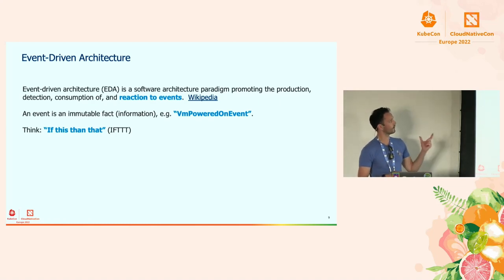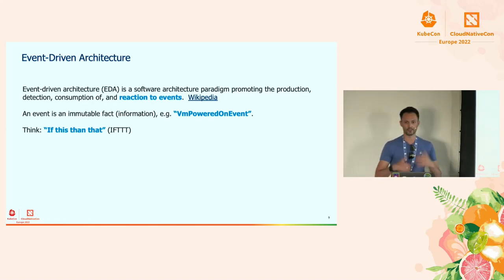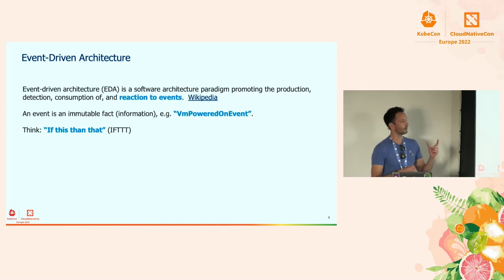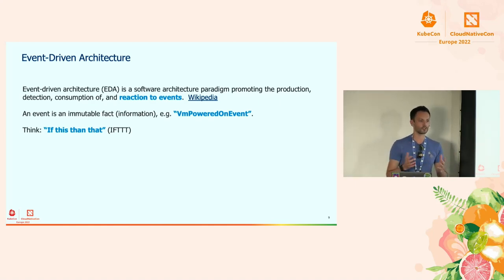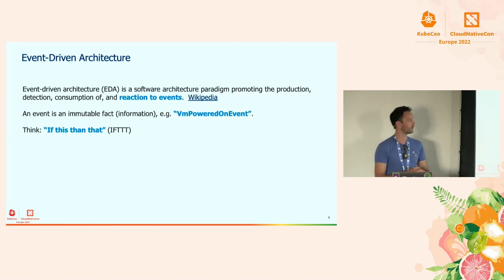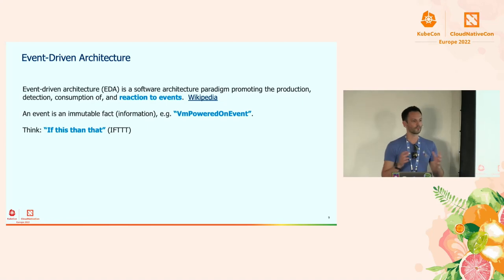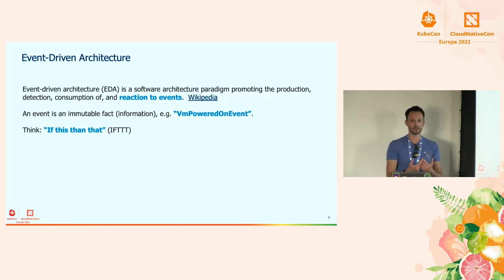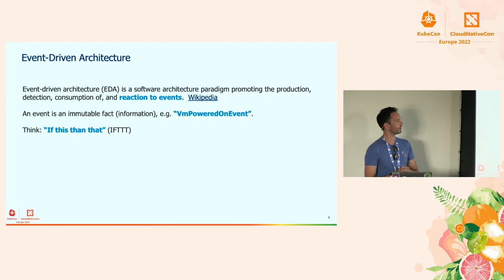The sender of the event — for example vSphere and vCenter — is not aware of the potential recipients. There's no expectation that the sender knows who's listening and reacting. There's no coupling between them. Since those facts are immutable, there's a difference between saying 'I want to power on a VM' versus 'the VM was powered on.' The first is a command, meaning it can fail.